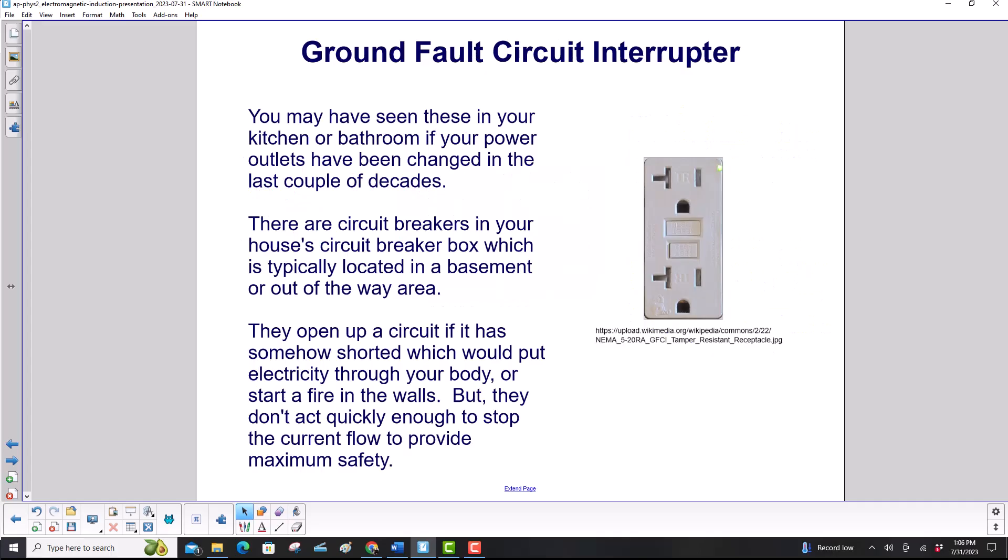Now for the ground fault circuit interrupter. You may have seen these in your kitchen or bathroom, if your power outlets have been changed in the last couple of decades. There are circuit breakers in your house's circuit breaker box, which is typically located in a basement or out-of-the-way area. They open up the circuit if it has somehow shorted, which would put electricity through your body or start a fire in the walls. But they don't act quickly enough to stop the current flow to provide maximum safety.